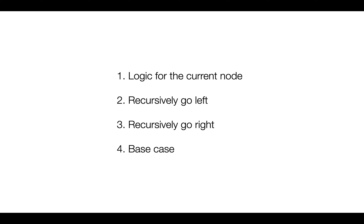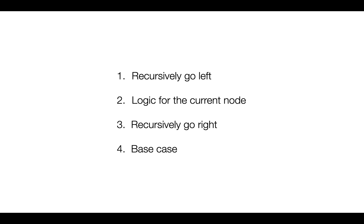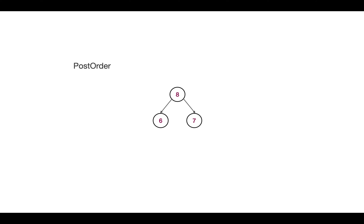In other traversals, for example in inorder traversal, the left node comes first, then the node itself, then the right node. So first we recurse for left, then we implement the logic for the current node, then we recurse right, and finally we write the base case. In postorder, the left comes first, then the right node, then the node itself.